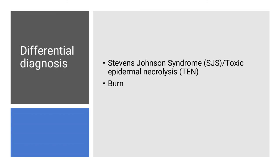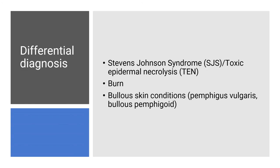Burns are another differential diagnosis because of the denuded skin areas. Other bullous conditions to differentiate include pemphigus vulgaris and bullous pemphigoid — both are IgG-mediated autoimmune diseases. In pemphigus vulgaris, IgG acts against Desmoglein 1 and Desmoglein 3 at the Stratum Granulosum level, producing superficial flaccid blisters. Bullous pemphigoid acts on hemidesmosomal proteins at the basal cell layer, producing deeper and therefore tense bullae that don't easily rupture — which is how you differentiate them clinically.